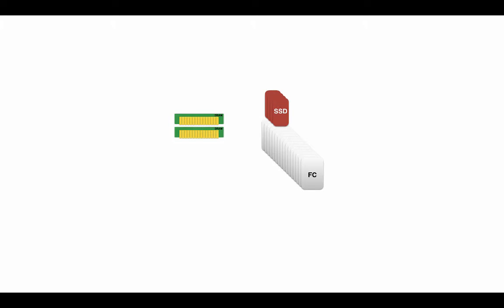The other part is reads. A read request from the host is going to check DRAM first. If it's not in DRAM, it's going to go to the FC drives, do a read request of the page from FC, return it to DRAM, and acknowledge the host. There's a concept of read cache which is a separate area within the system — you can picture it on a slide rule. Data protection always comes first, and the more write cache you use the less read cache you have.